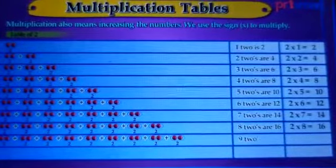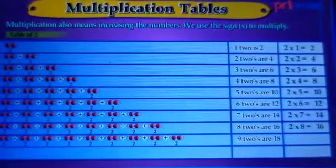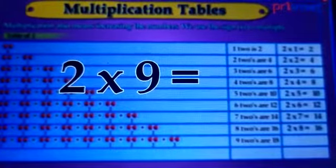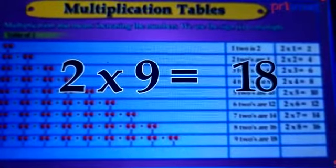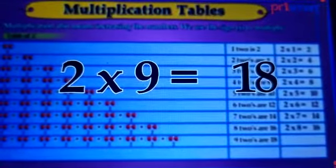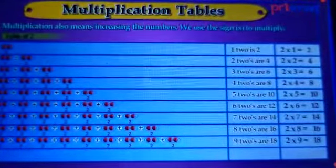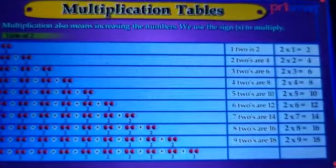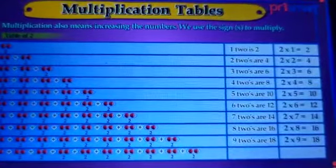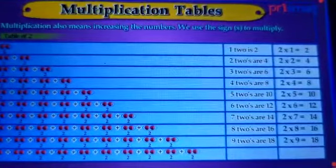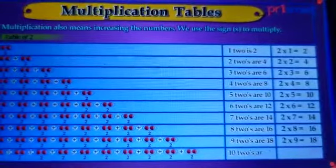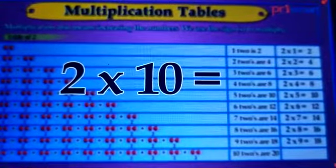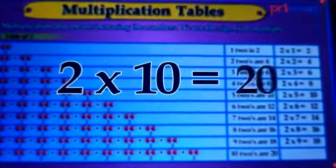Nine twos are eighteen. Two into nine equals to eighteen. Ten twos are twenty. Two into ten equals to twenty.